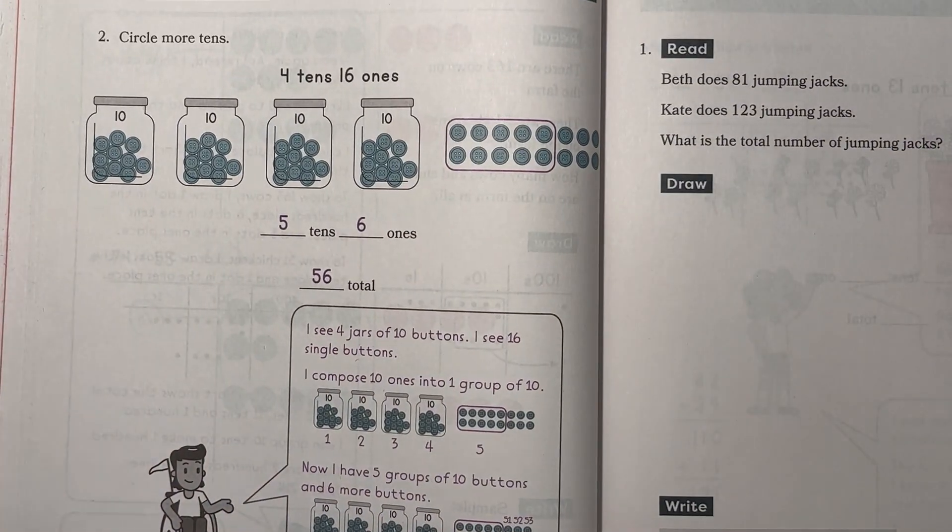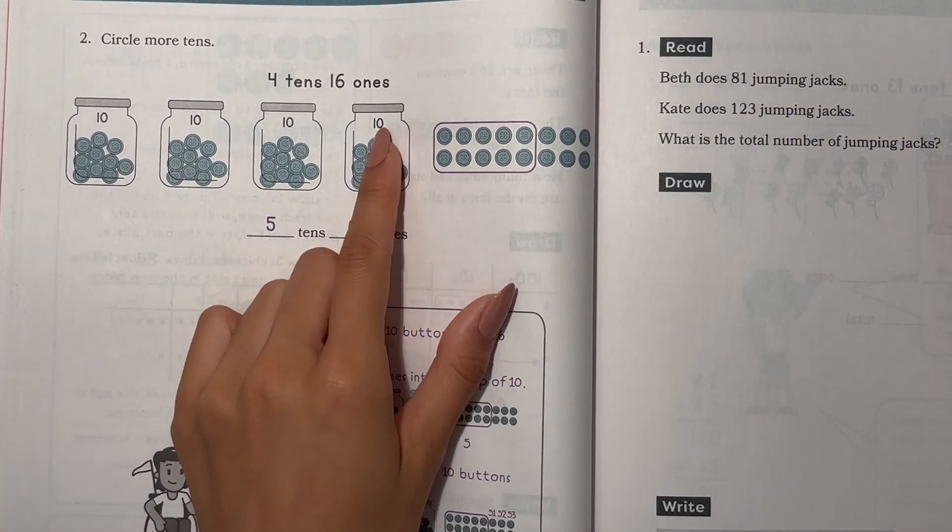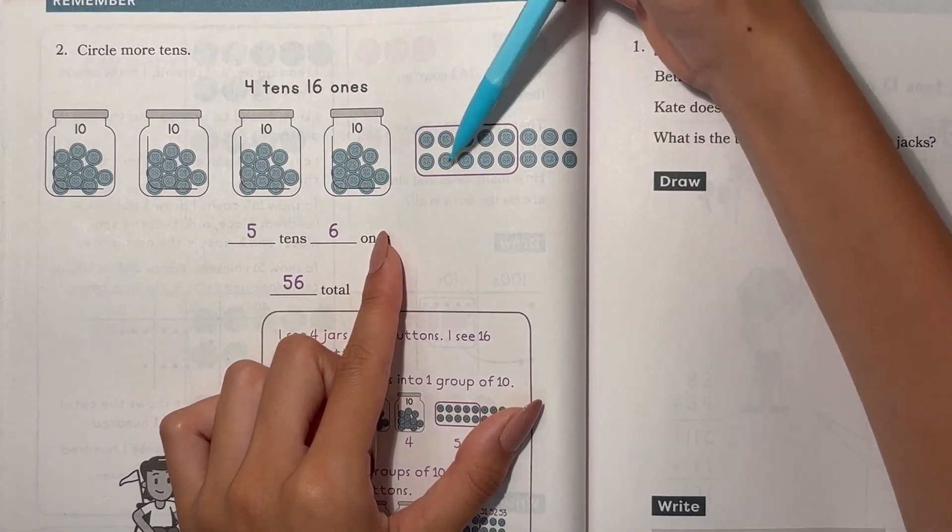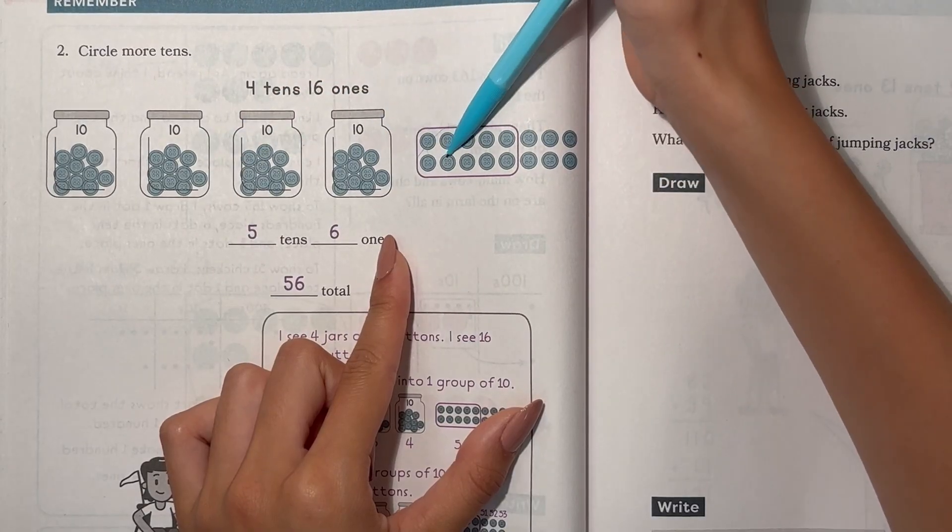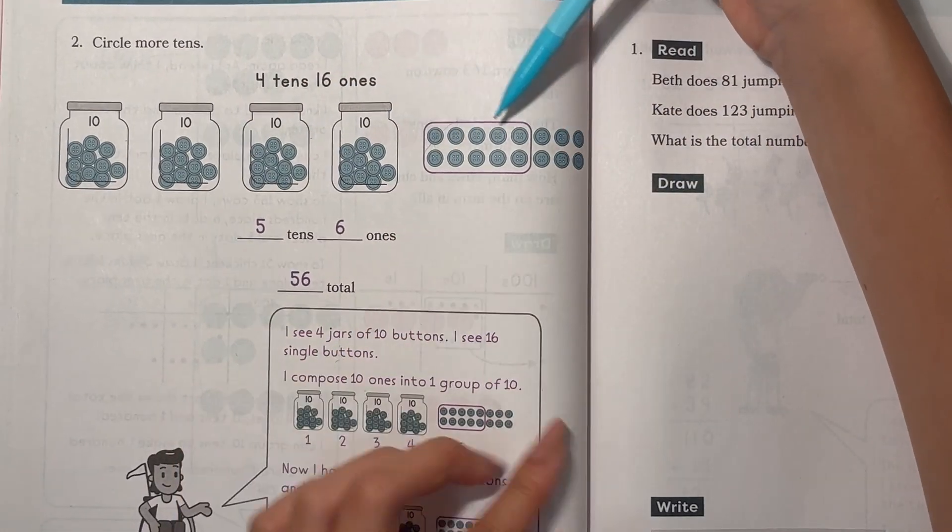And circle more tens. 4 tens, 16 ones. So we're circling another set of tens. So we have 1, 2, 3, 4, 5 tens, and 6 ones. 56.